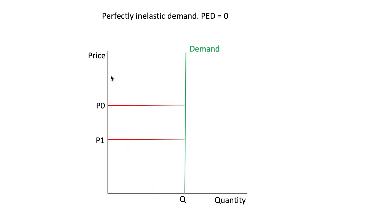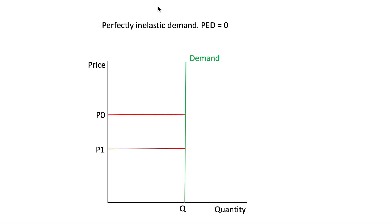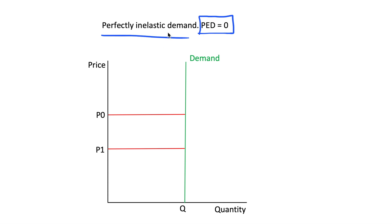As in the previous video, we look at the special case: perfectly inelastic demand. As we get smaller and smaller, our price elasticity gets more and more inelastic, and the smallest it can get is zero. Note that this isn't negative infinity — negative infinity would be perfectly elastic. Perfectly inelastic is zero, and it gives us a perfectly vertical demand curve.